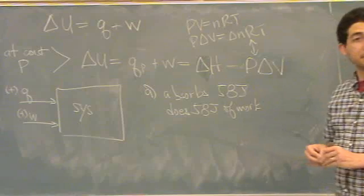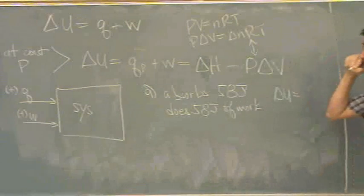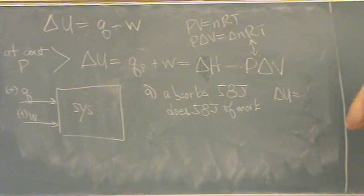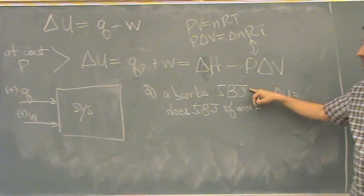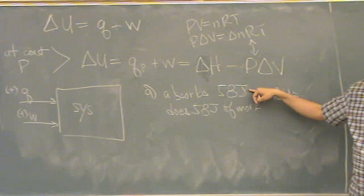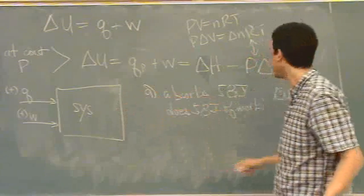So it wants delta U. So you go delta U is Q. What's the value for Q? 58. 58. It's going to be this number right here, positive or negative? Positive. It's going to be positive because it's going into the system. It's being absorbed by the system. Okay. So positive 58.